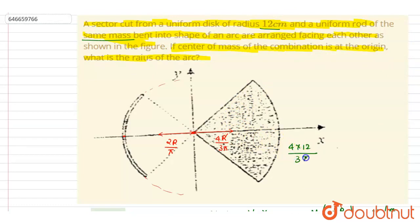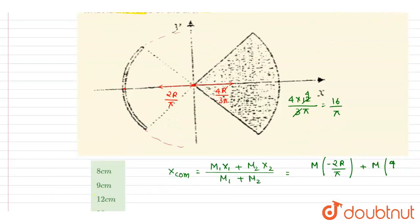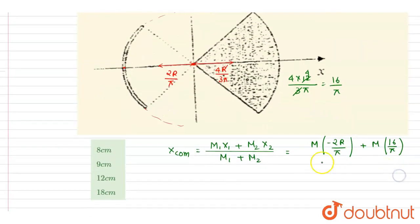By 3 pi, so this will get cancelled out and it will be 16 by pi. So we'll write down in division, we'll write down the total mass 2m. So it is said that the center of mass is lying at the origin, so it will be equals to 0.